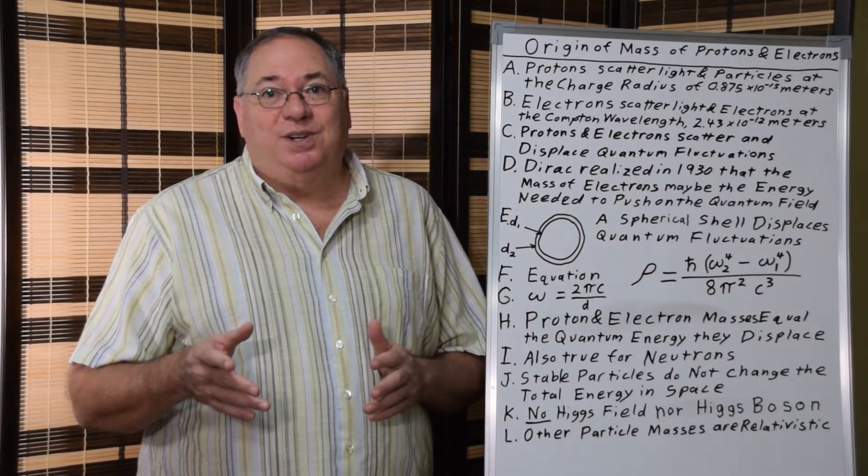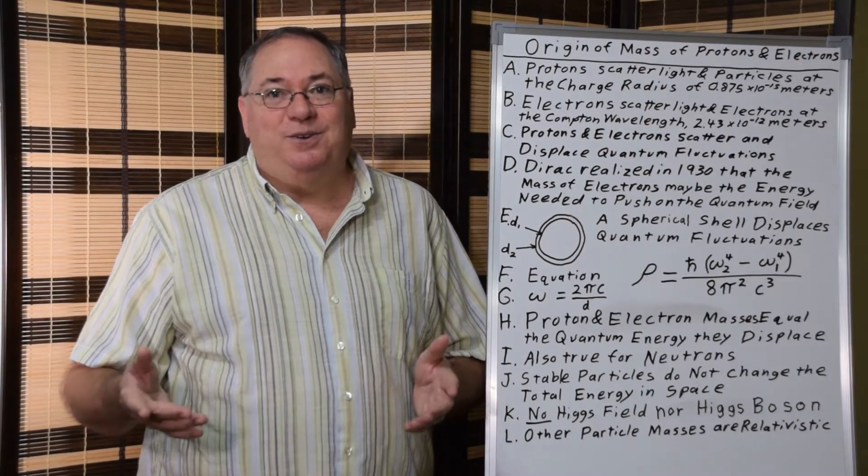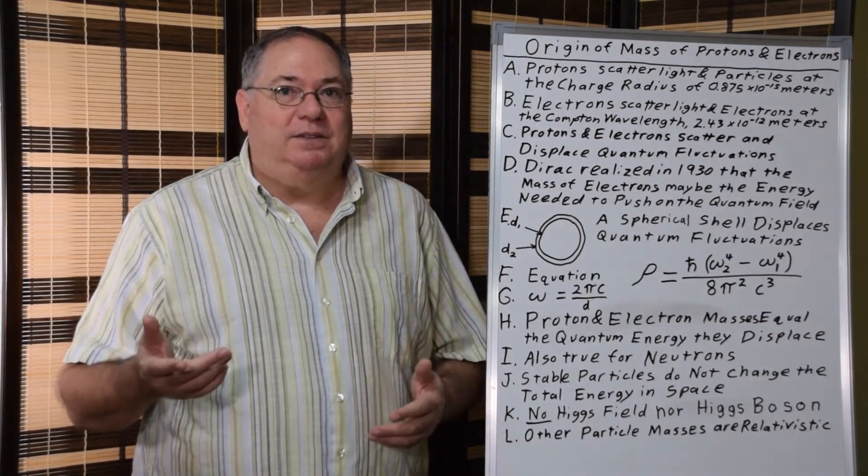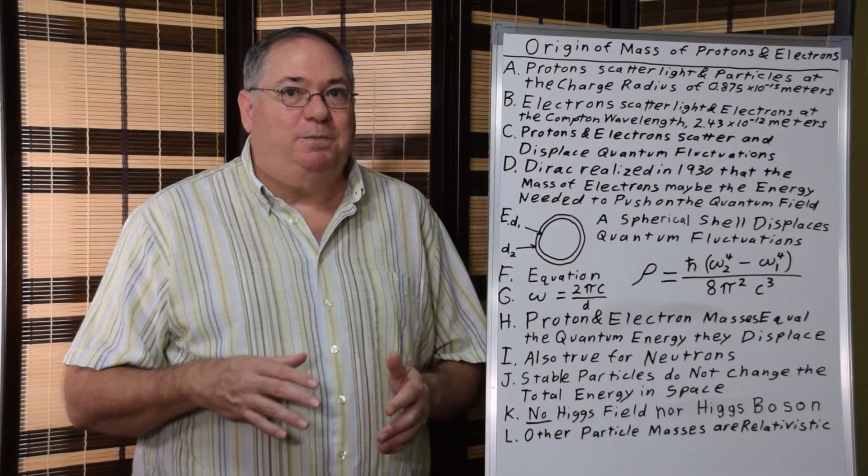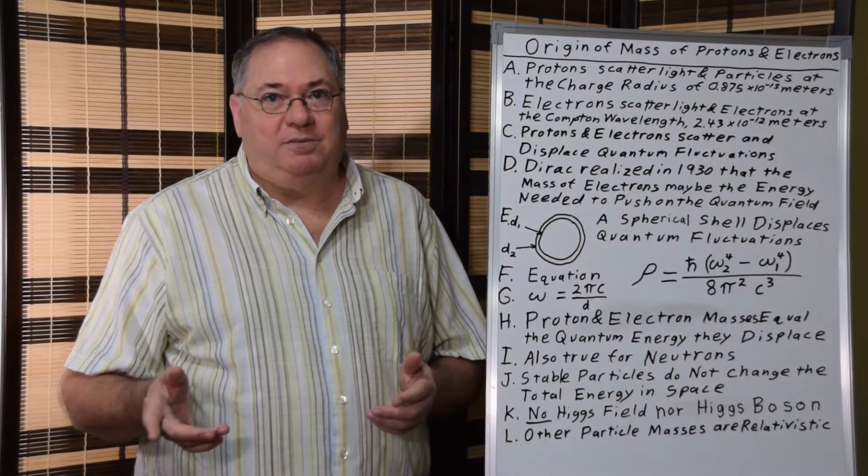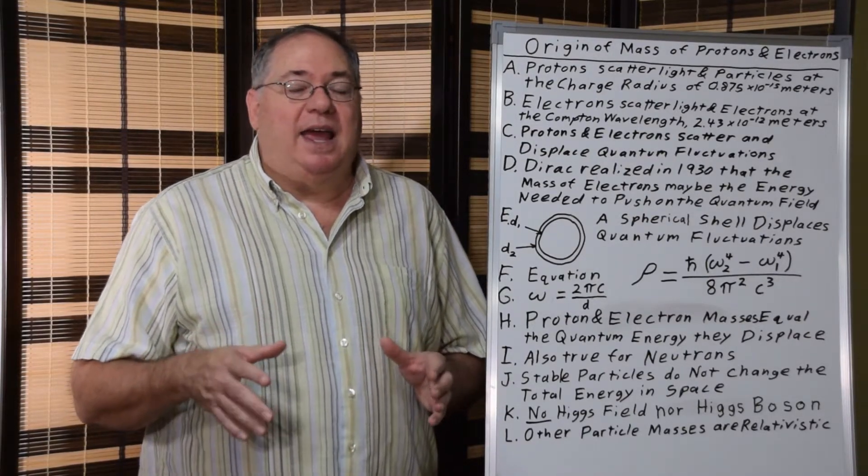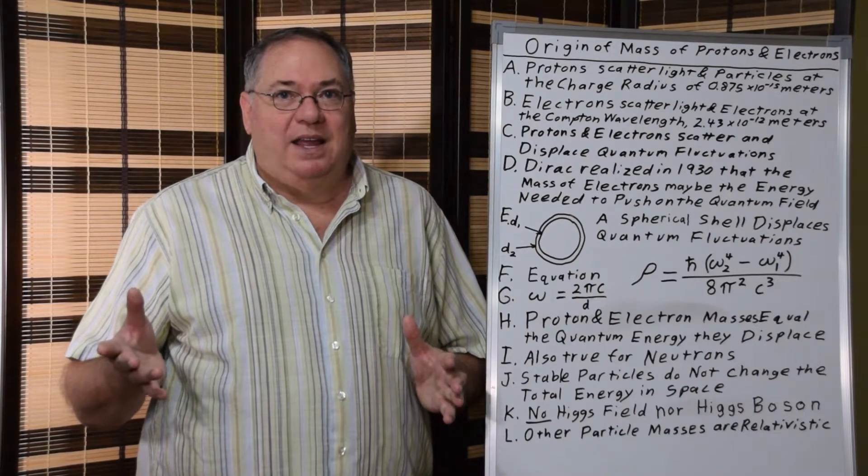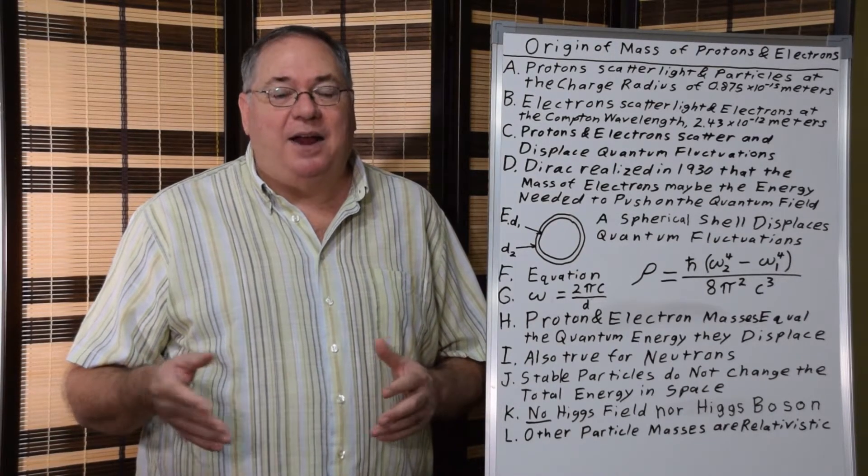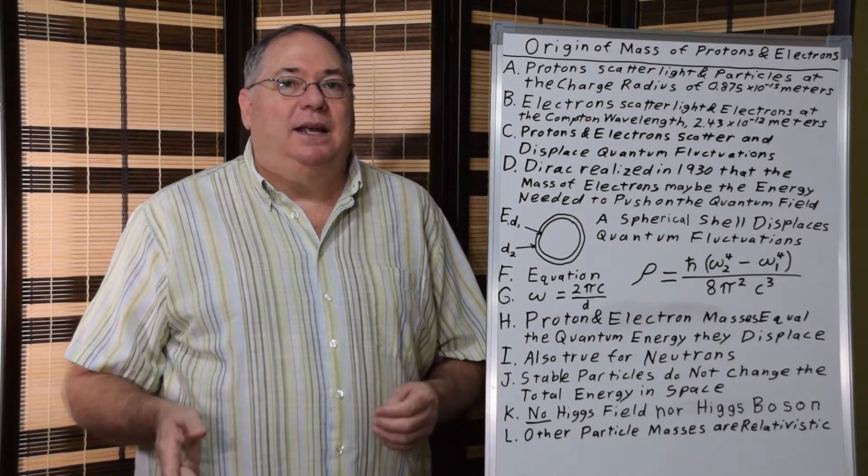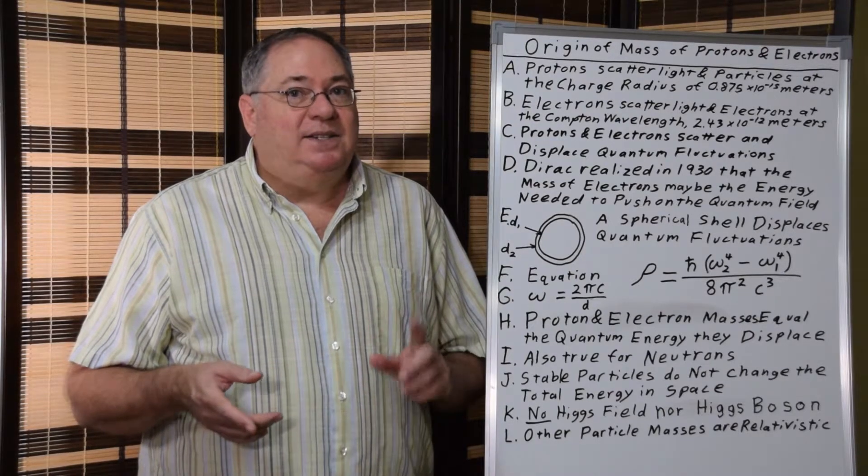The mass of all three of those is due to the displacement of quantum fluctuations. So the Higgs field is really the quantum field. There is no special Higgs field to account for it, and there's no special Higgs boson to account for it. Now there is the case of all the hundreds of unstable particles, and how do they get their mass? And that's different.